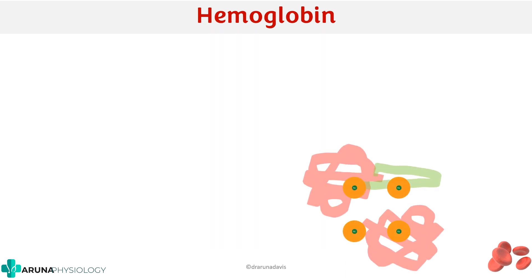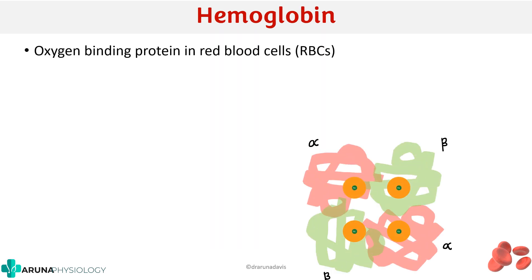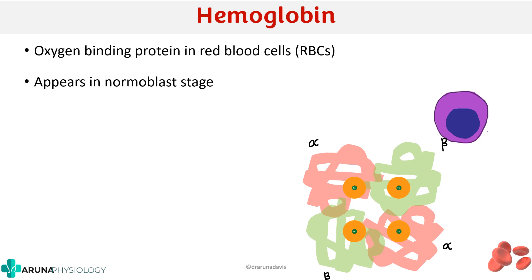Hemoglobin is basically a protein which can carry oxygen — it is an oxygen binding protein in the red blood cells and it appears during the normoblast stage. In erythropoiesis, it is at the normoblast stage that the cytoplasm will change its color to a more acidophilic one, and that is because of hemoglobin synthesis.